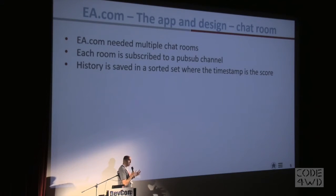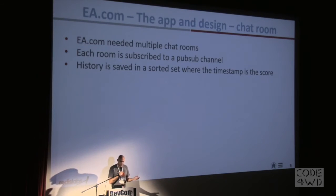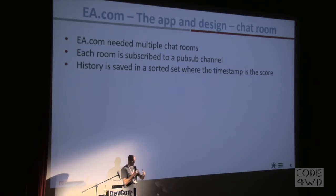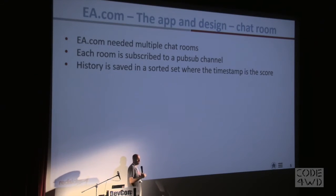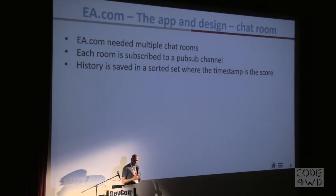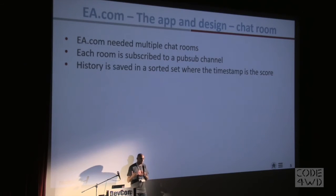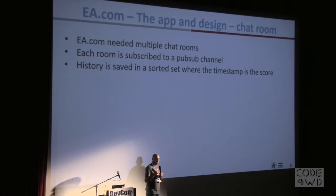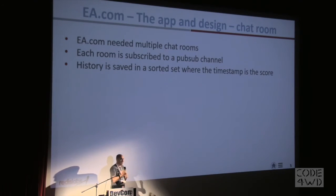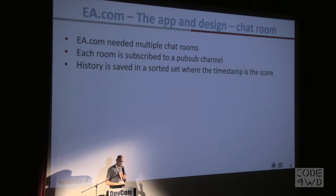They had two use cases to solve. First was the chat room — they needed multiple chat rooms for each game or subset of users, and each room had a pub/sub channel to serve all users with updates. All the history of the chats was stored in a sorted set, meaning they had a list of all messages each with a timestamp as the score. Redis sorted sets sort by score, so you can retrieve messages in sorted or reverse order, or query a subset by time range.